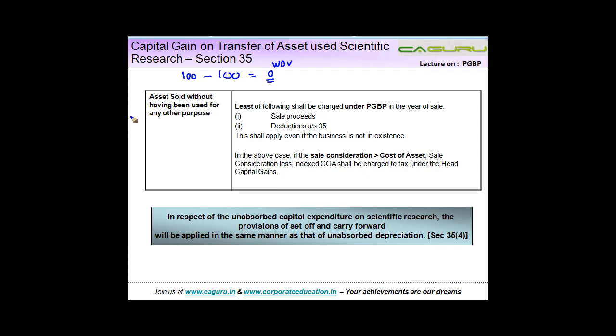Now let's see assets sold without having been used for any other purpose. So you use this asset for scientific research and then you sold it directly. Least of the following shall be charged to tax under the head PGBP in the year of sale: sale proceeds, let's say you sold it for 50, or sale proceeds less deduction under section 35. So sale proceeds is 50, deduction under section 35 is 100. So least of the following two is chargeable under PGBP. So 50 will be charged to tax under the head profits and gains of business and profession.